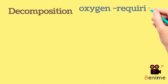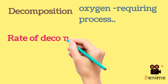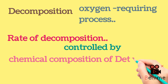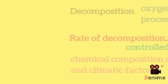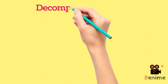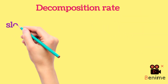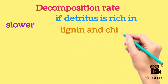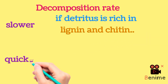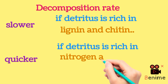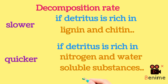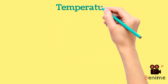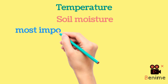Decomposition is largely an oxygen-requiring process. The rate of decomposition is controlled by the chemical composition of detritus and climatic factors. In a particular climatic condition, decomposition rate is slower if detritus is rich in lignin and chitin, and quicker if detritus is rich in nitrogen and water-soluble substances like sugars.